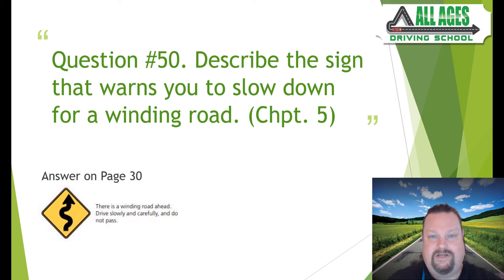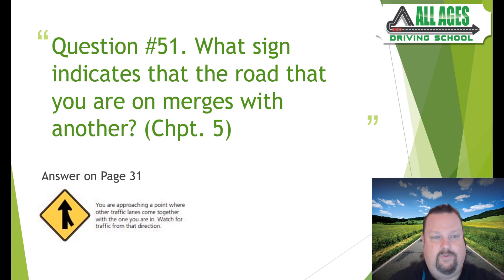Question number fifty: describe the sign that warns you to slow down for a winding road. Chapter five, page 30. The winding road sign is a yellow diamond-shaped hazard warning sign. Don't confuse it with the double curve sign. When you see a winding road sign: drive slowly and carefully and do not pass.